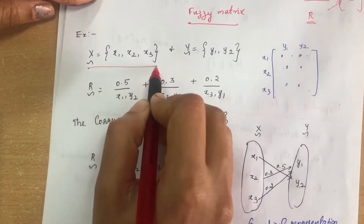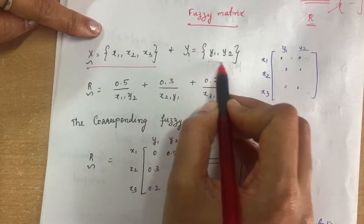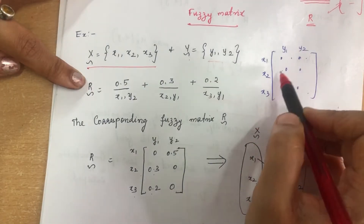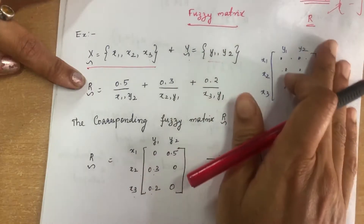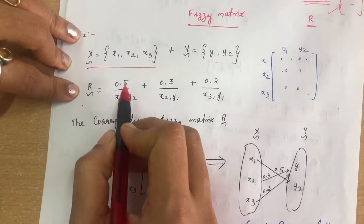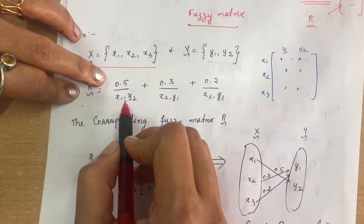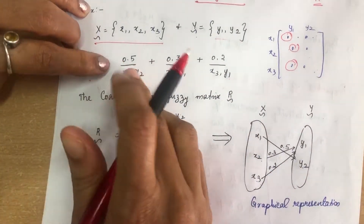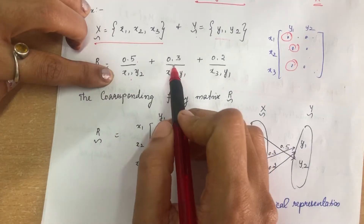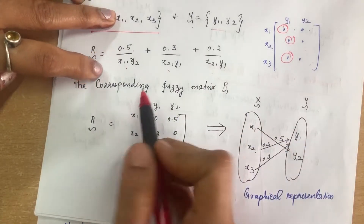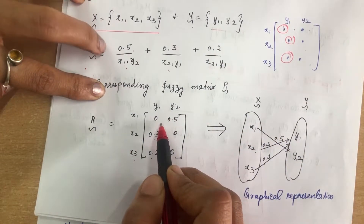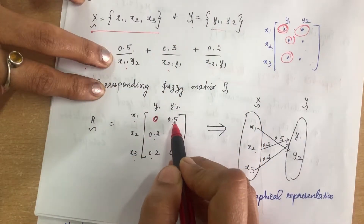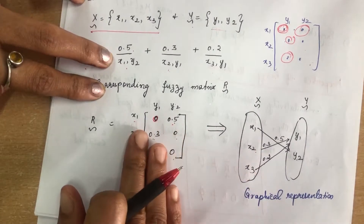Let me explain fuzzy relation with an example. X = {x1, x2, x3} and Y = {y1, y2}. The Cartesian product gives all pairs: x1y1, x1y2, x2y1, x2y2, x3y1, x3y2. The relation R selects only some values: R = 0.5/(x1, y2) + 0.3/(x2, y1) + 0.2/(x3, y1). The corresponding fuzzy matrix has 0 for missing pairs: the entry for (x1, y2) is 0.5, for (x2, y1) is 0.3, for (x3, y1) is 0.2, and 0 elsewhere.